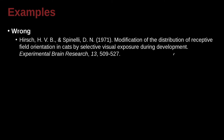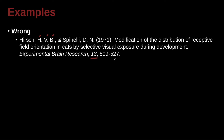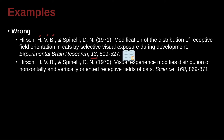Hirsch HVB and Spinelli DN — this is looking good. We have a complicated name here. Hirsch is the last name, and H, V, B are the first, middle, and additional initials. They may have more than one name, but we're just giving them in order. Then 1971: 'Modification and distribution of receptive field orientation in cats by selective visual exposure during development.' And here is the journal name — Experimental Brain Research — with the issue number and then the pages.